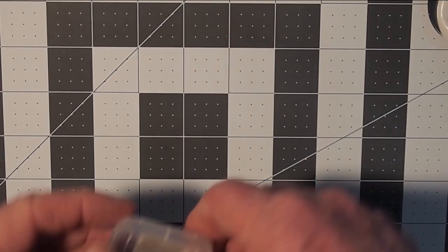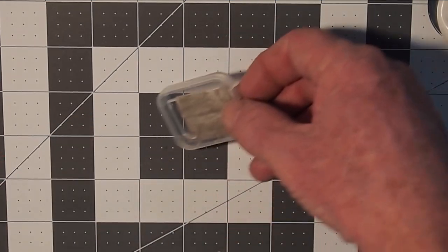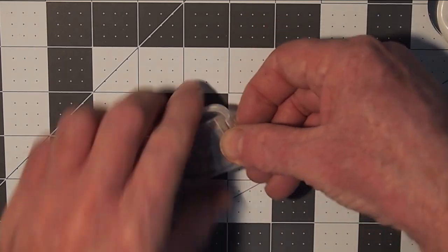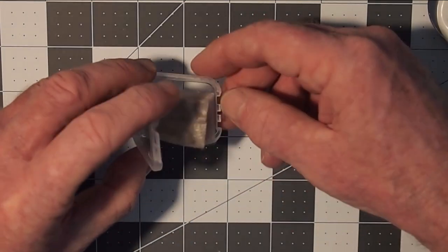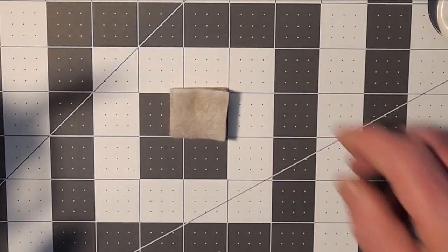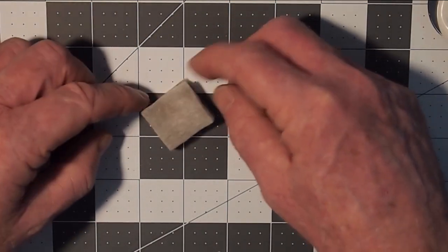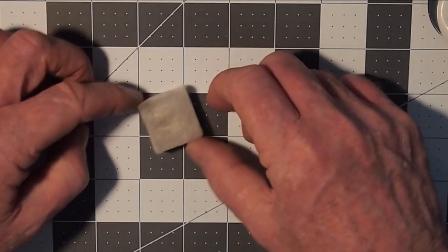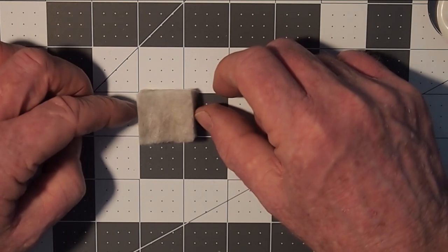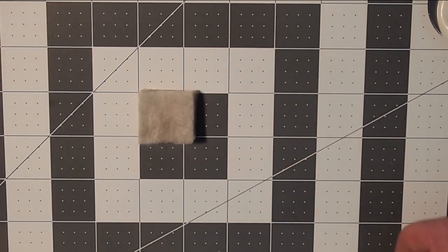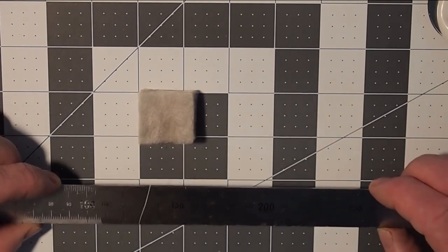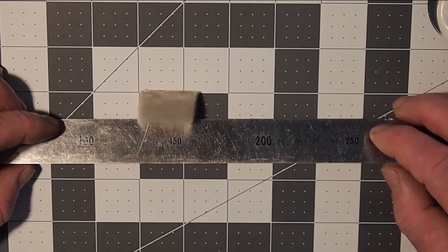To start this project, we're going to take a regular size catalyst pad which is about 1.25 by 1 inches, and we're going to cut it in half across the wider length, which is the 1.25.